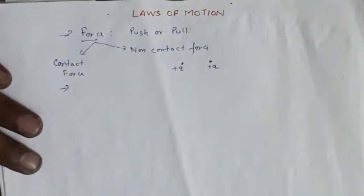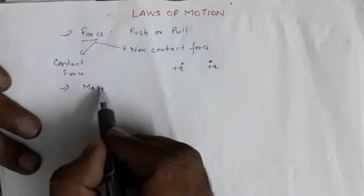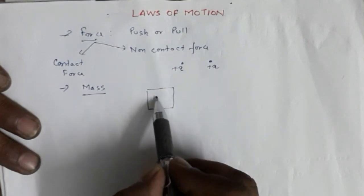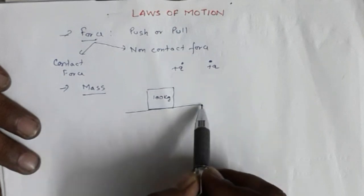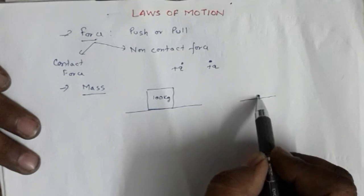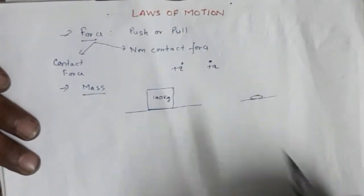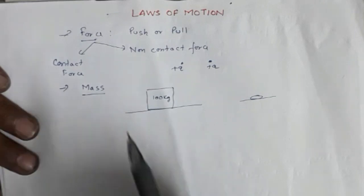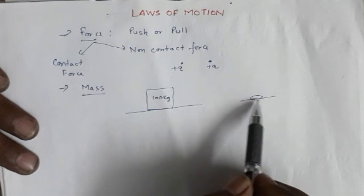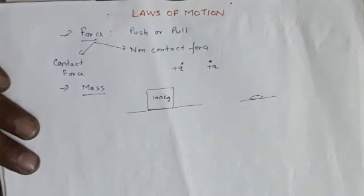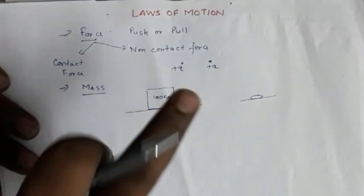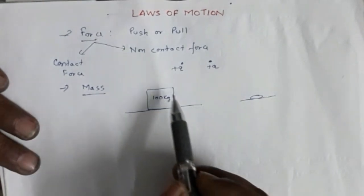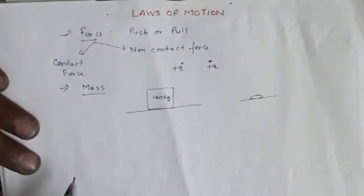Another important term in this chapter is mass. If you have a 100 kg block and a coin on a horizontal surface, you require more force to move the 100 kg block than the coin. Similarly, greater force is needed to stop the more massive body. This is how we compare mass.